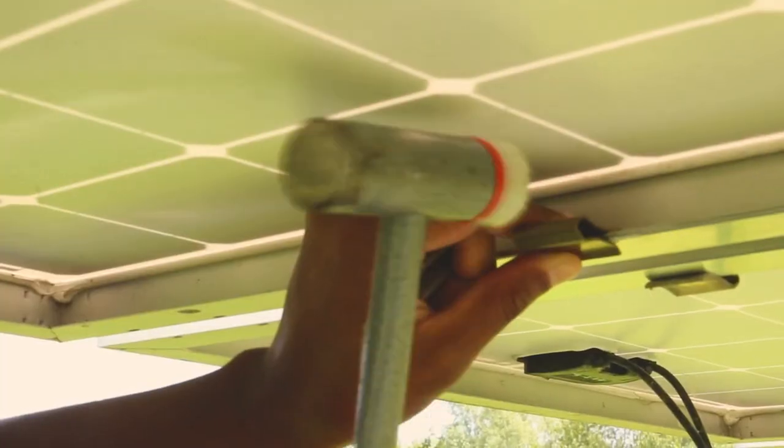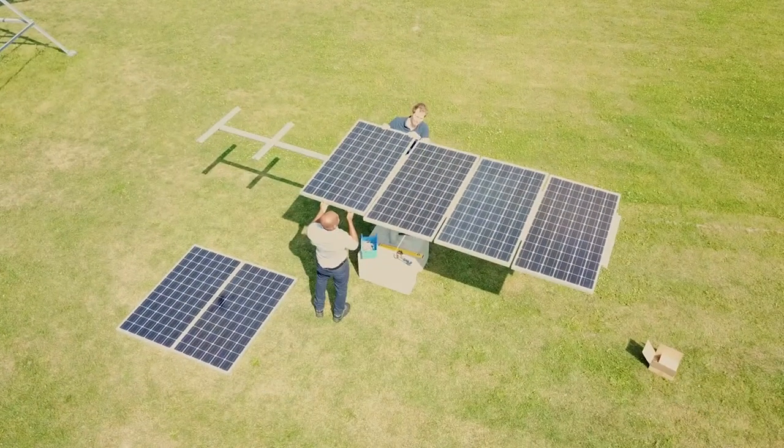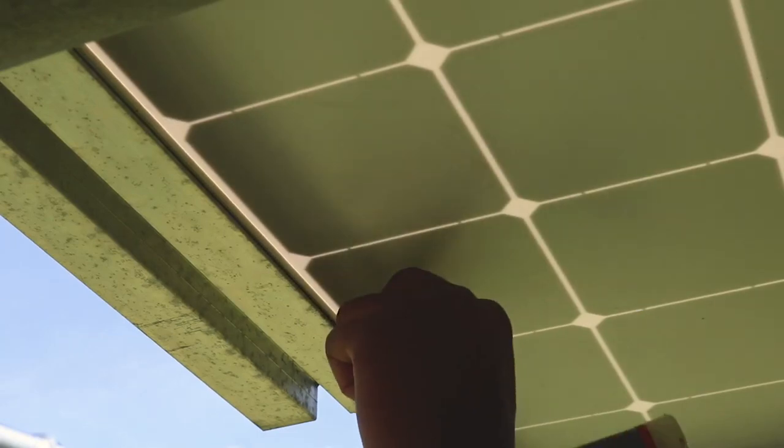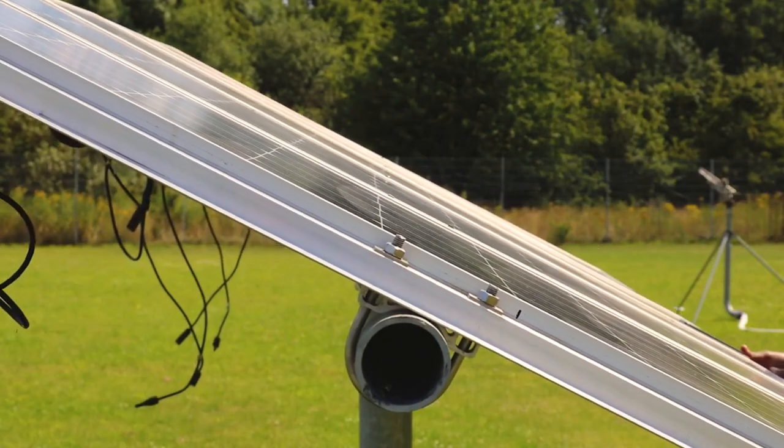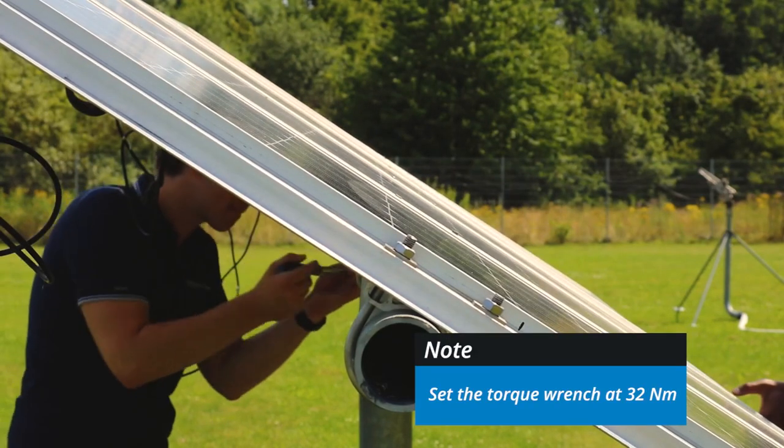The PV module clips can be used to fix the solar modules on the rails. If necessary, set the proper angle of the PV modules and tighten the U-bolt.